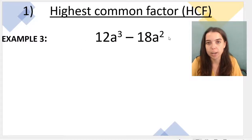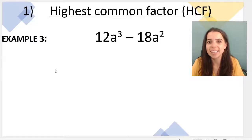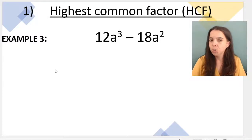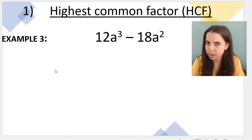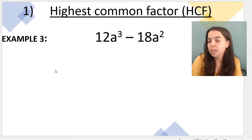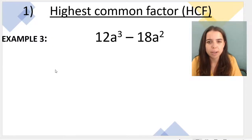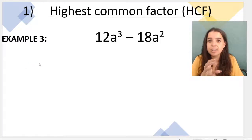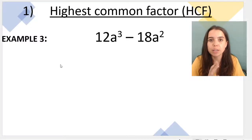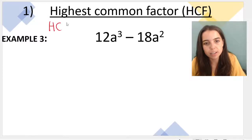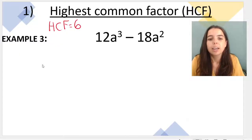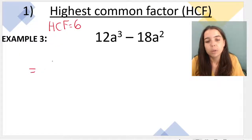In this last example we have 12a³ − 18a². What is the biggest number that can divide into both 12 and 18? If you say 2 — yes, but there's a bigger one. If you say 3 — again there's a bigger one. What about 6? Six divides into 12 twice and into 18 three times, with no remainder. That is the highest common factor of the numbers, so 6 is part of our highest common factor.